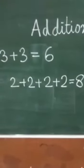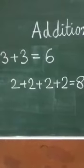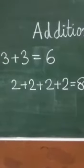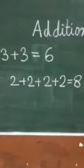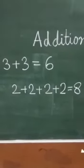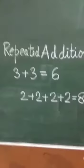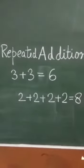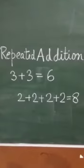So children, what are we doing here? We are adding the same digit again and again. So when we add the same number again and again, it is called repeated addition. It is known as repeated addition.